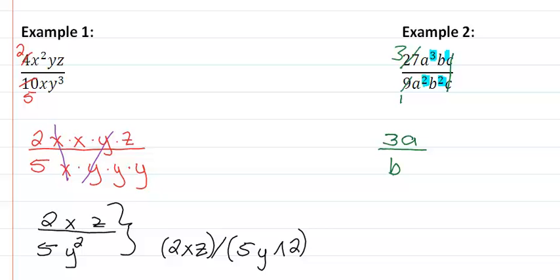So we're left with 3a over b. And again, when you enter this into WAMAP, you'd want to enter this as 3a, using parentheses, divided by b.